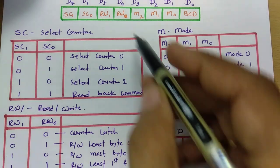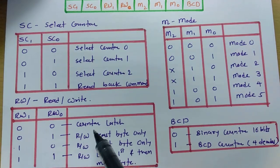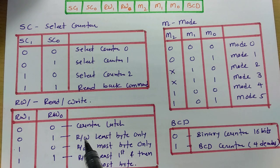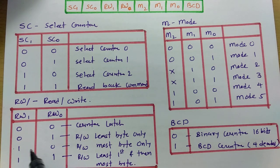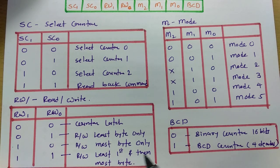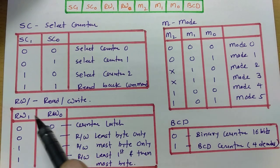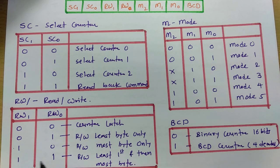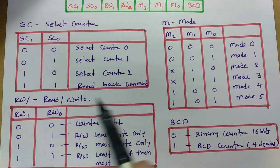The RW0 and RW1 bits define read/write operation: 00 performs counter latch operation, 01 reads/writes the least significant byte only, 10 reads/writes the most significant byte only, and 11 reads/writes first the least significant byte and then the most significant byte.